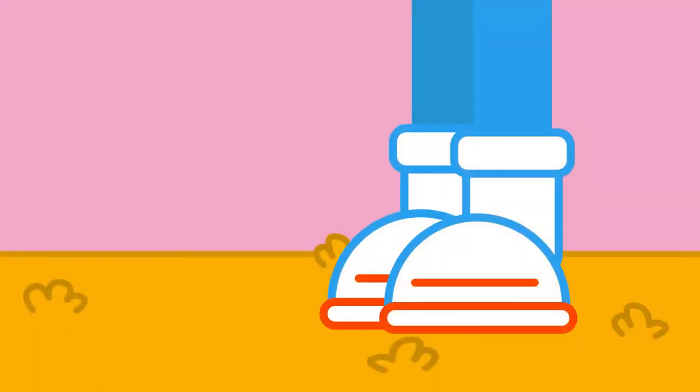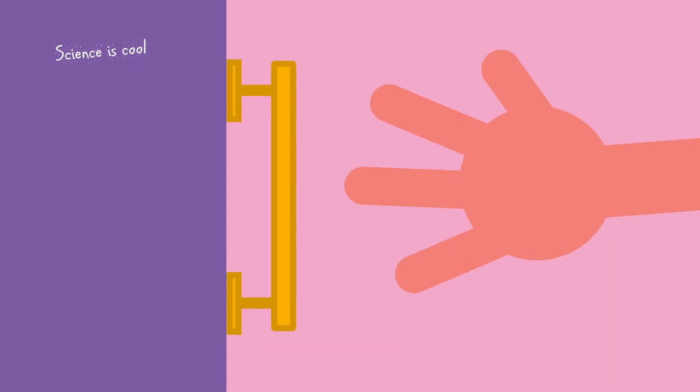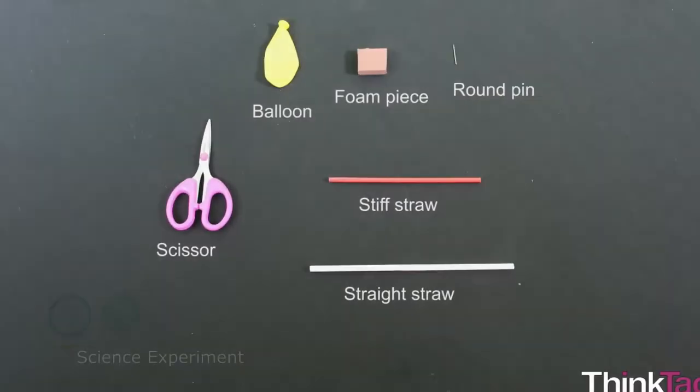So the next time you drag your rubber shoes across a carpet, and then touch a door handle or your friend, and you hear a click and feel a small shock, you know that you have just witnessed static electricity in action.